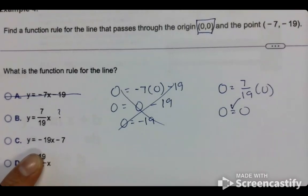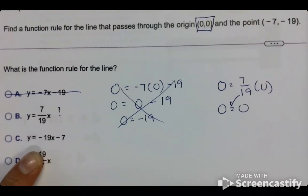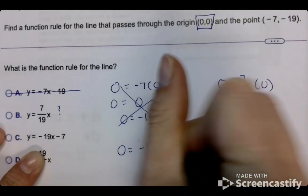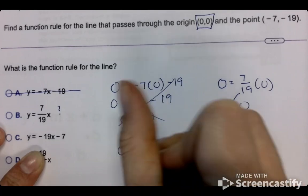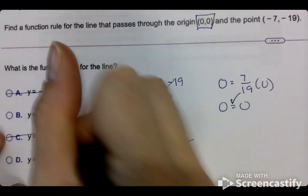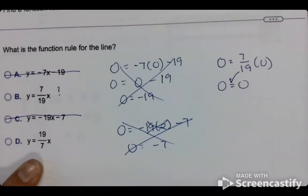I want you to try C and see if it works out. Welcome back. So we should have 0 equals negative 19 times 0 minus 7. 0 equals... That cancels out. 0 does not equal negative 7, so that one's out. Try the last one. See if the last one works.